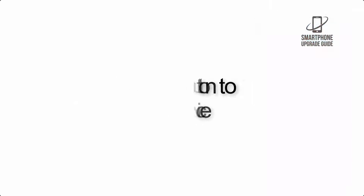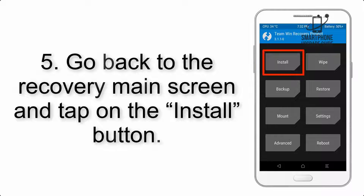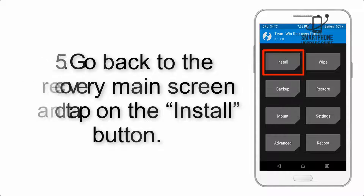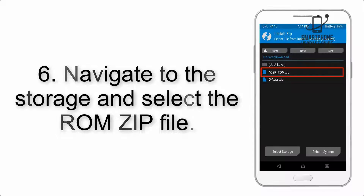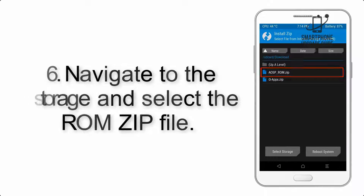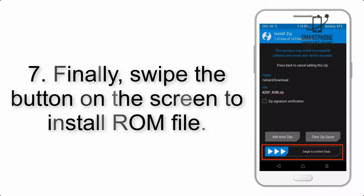Step 5: Go back to the recovery main screen and tap on the Install button. Step 6: Navigate to the storage and select the ROM zip file. Step 7: Finally, swipe the button on the screen to install the ROM file.